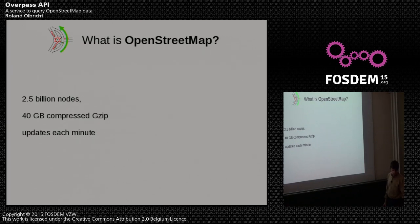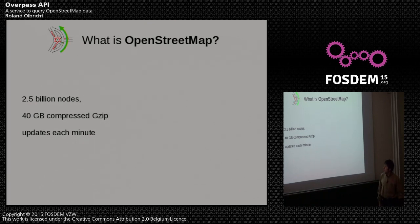We have 2.5 billion nodes, which amount to in total 40 gigabytes of compressed zip XML data. And updates are coming in each minute.